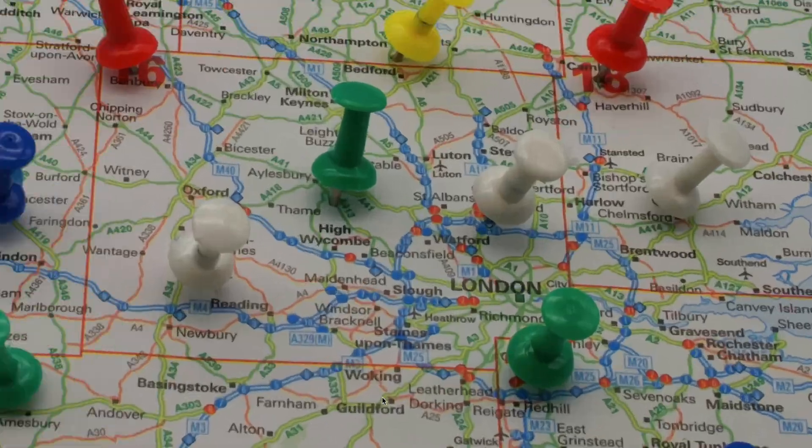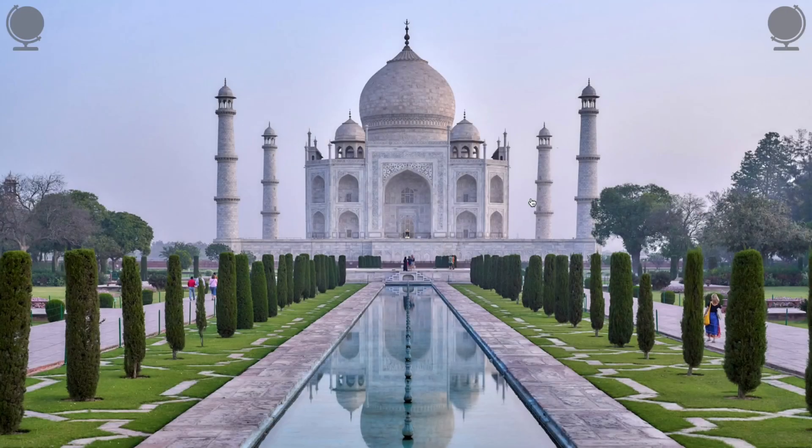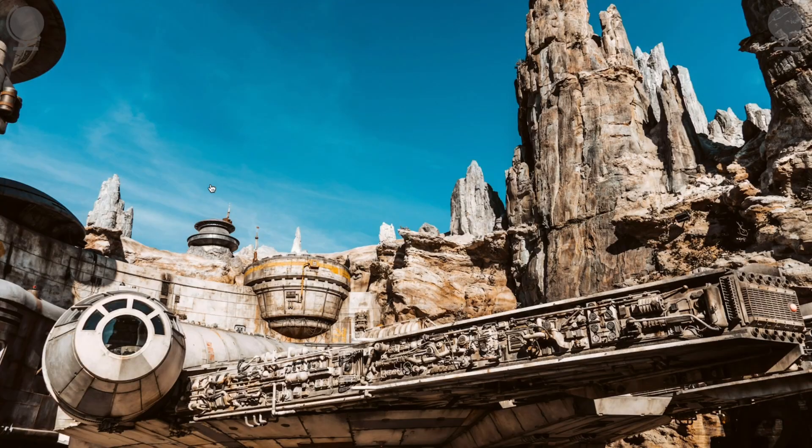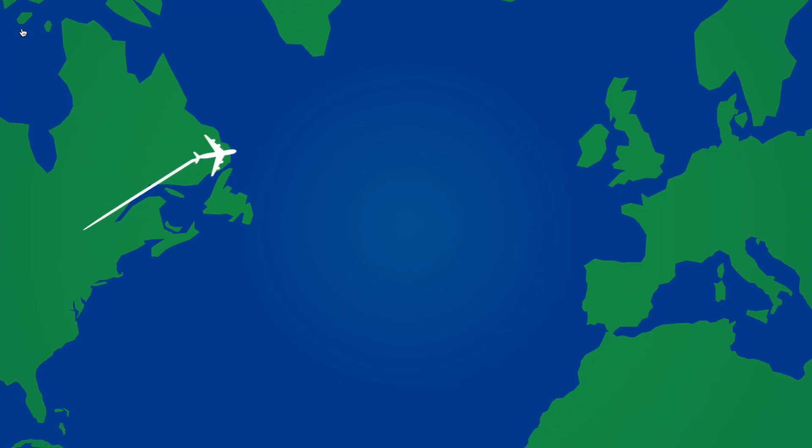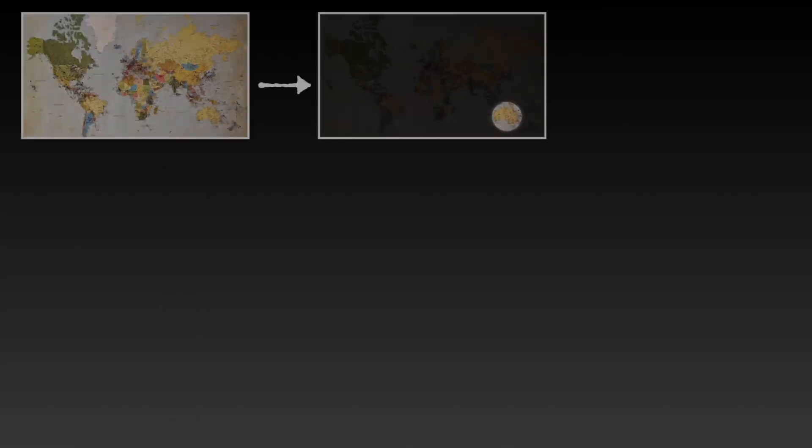I want to show you how to creatively work with maps in Apple Keynote presentations. Typically a map is a static slide with a lot of information and it's hard for people to know what you want to talk about.